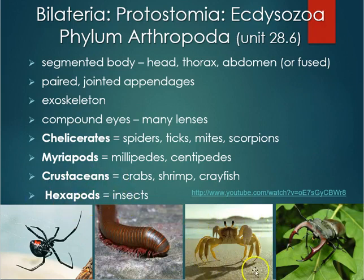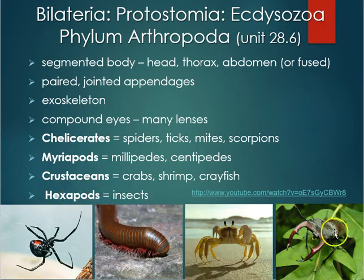Crustaceans include crabs, shrimp, and crayfish. They have an exoskeleton they must shed to grow. Soft-shell crabs are crabs captured right after molting, when the new skeleton underneath is still soft before it hardens. Hexapods are the insects — they have six legs, three pairs — and they are a hugely successful group of animals.